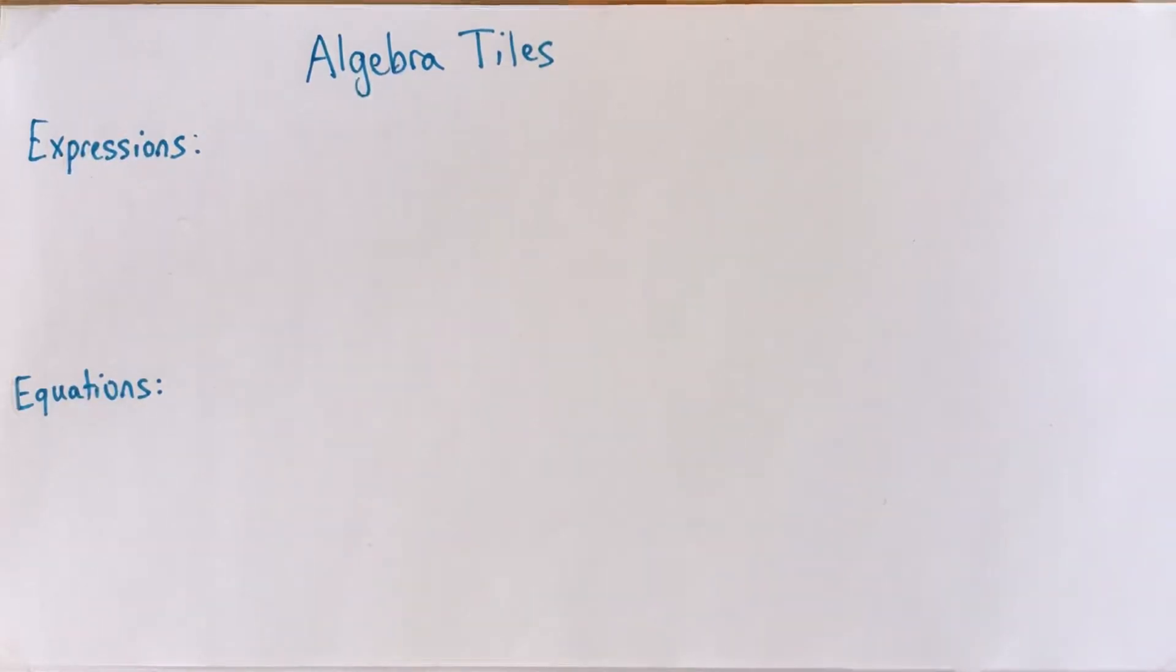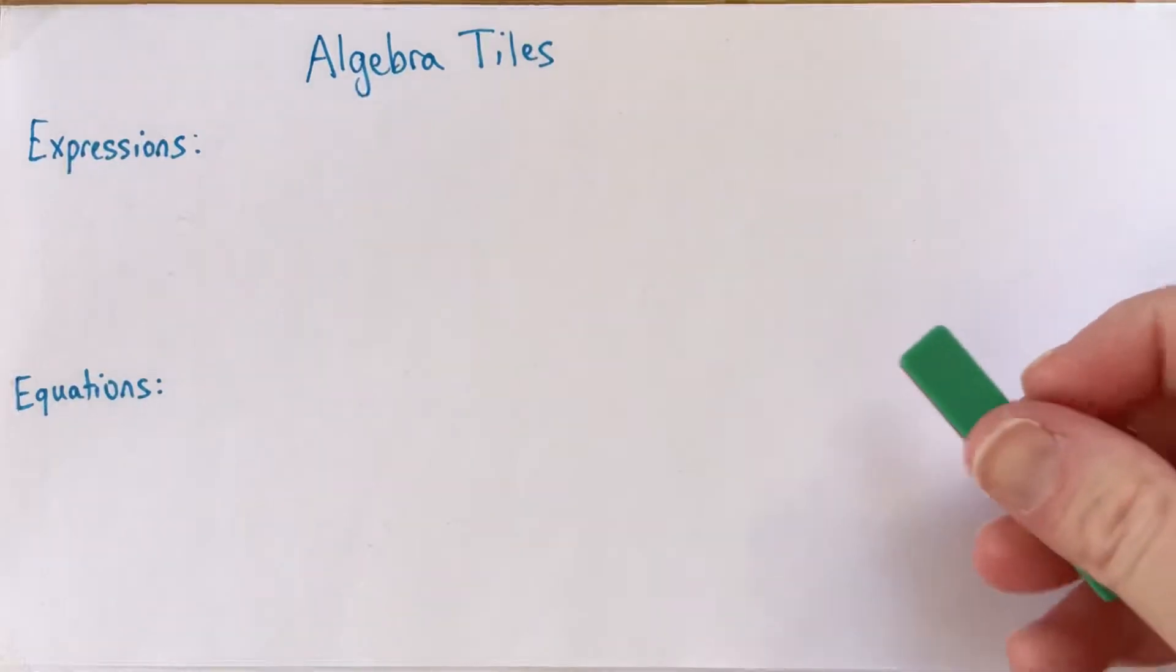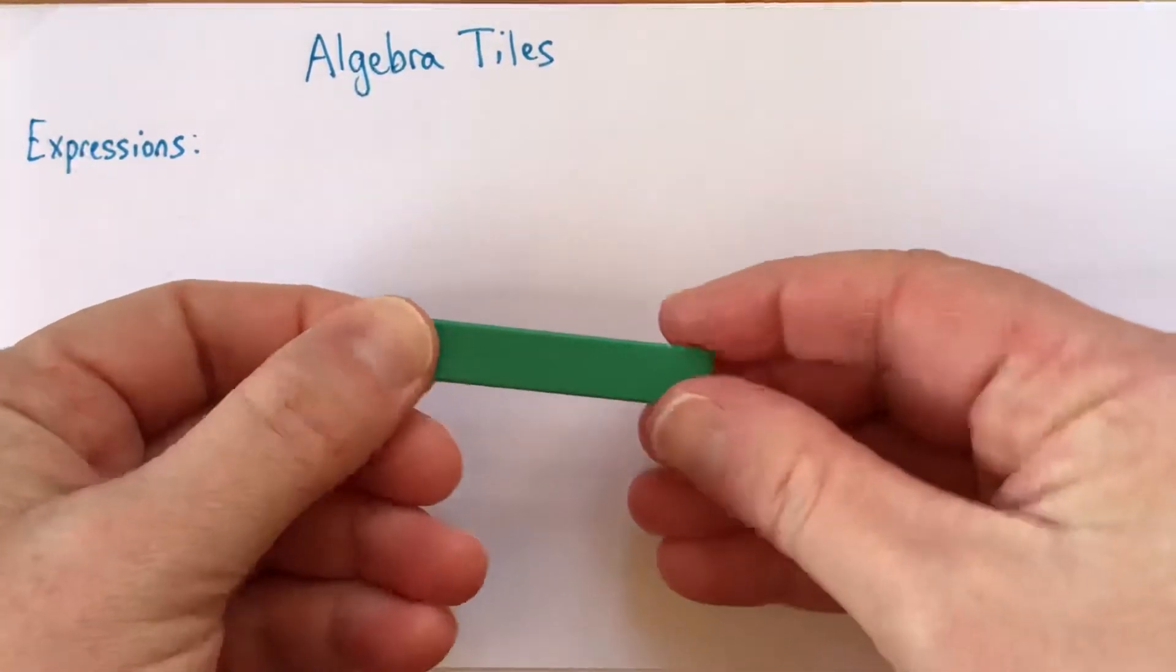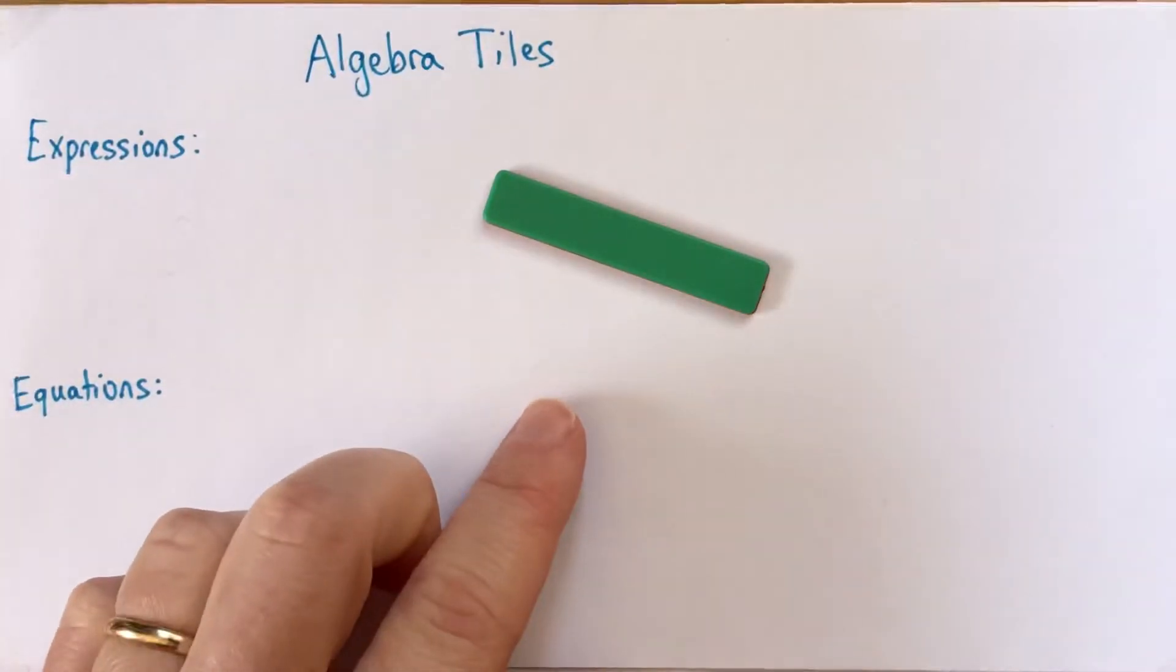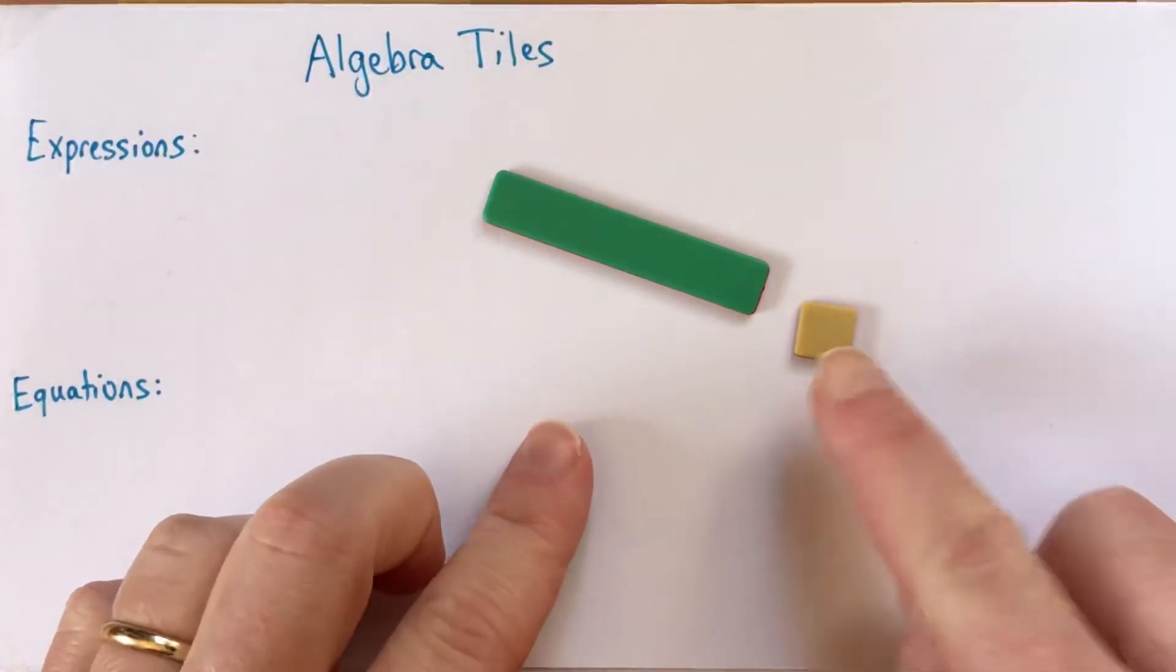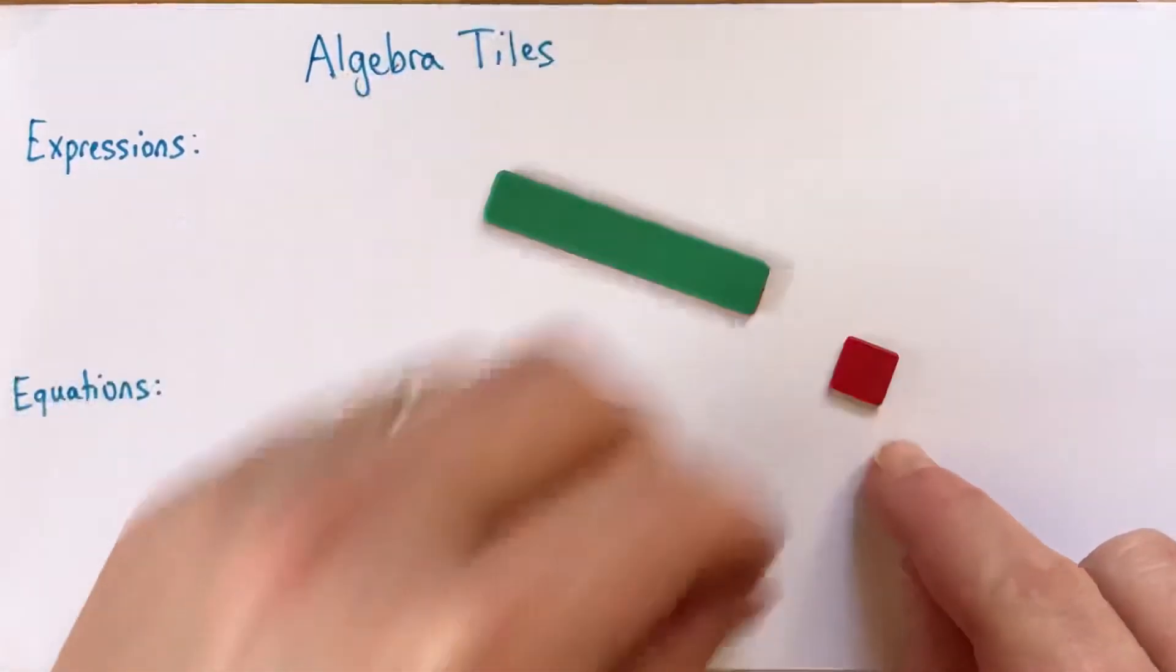Algebra tiles can look different. Mine look like this. I've got some that look like this, green on one side and red on the other. They're long and skinny. And I have some other little ones that are kind of beige on one side and red on the other.